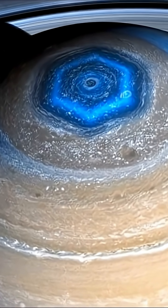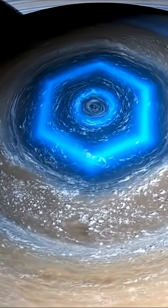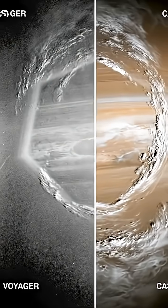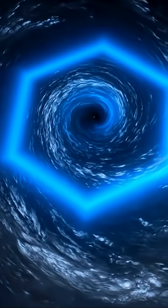At the North Pole, a storm shaped like a perfect hexagon has been spinning for decades. Scientists still don't fully understand how it keeps this six-sided shape or why it's so stable.